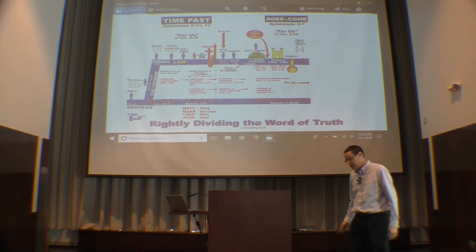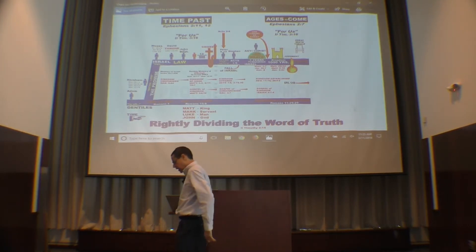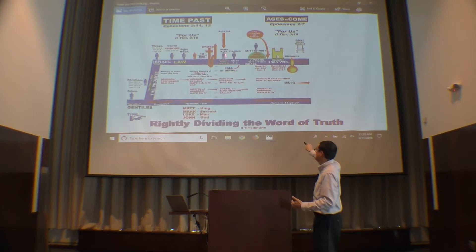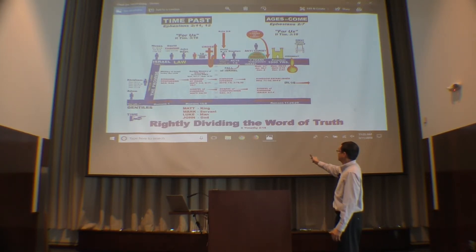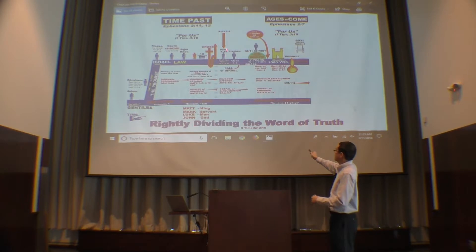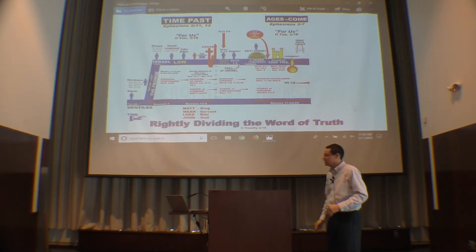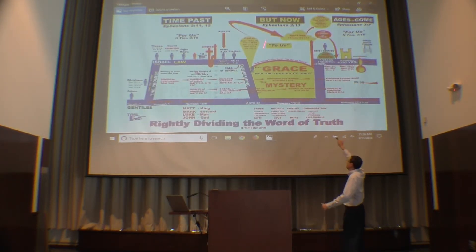Remember Acts chapter 2? Peter stands up and says, 'This is that which was spoken by the prophet Joel. The sun shall be turned into darkness, and the moon into blood before the coming of the great notable day of the Lord.' What Peter is saying in Acts 2 is: right now the book of Joel, the Old Testament, is being fulfilled, and we're about to enter the great tribulation. From here to here is only one year. What Peter's saying is, we're in the last days — we're about to be right here. Because this entire body of time, almost now 2,000 years, was not revealed.